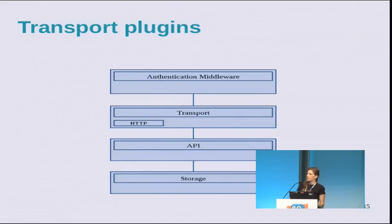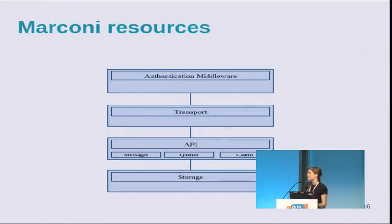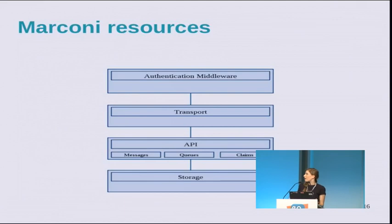On the transport layer, we currently support HTTP as our production protocol, and we plan to support TCP for the Juno release. On the API layer, we expose Marconi's resources. Messages are the main and most important resource — that's what Marconi is all about: delivering messages. These messages can be read, posted, and claimed from a queue, which is a logical entity. When a worker claims a message from a queue, other workers cannot process those messages at that time. You can also configure all of your messages, queues, and claims in terms of TTL.